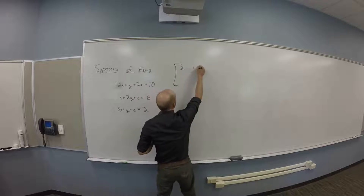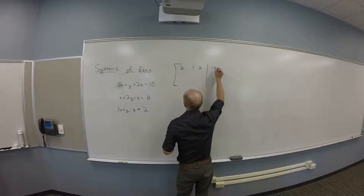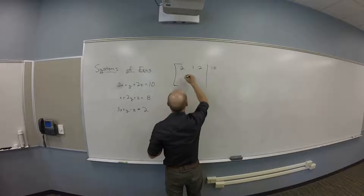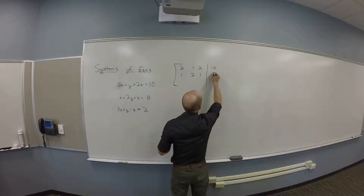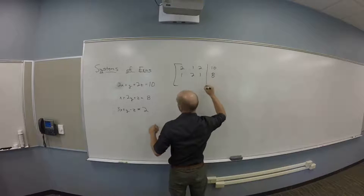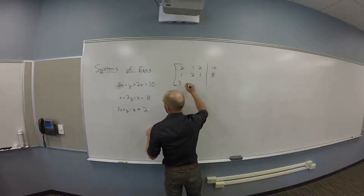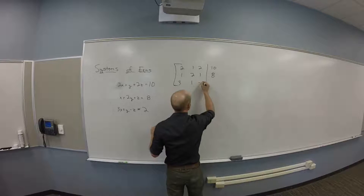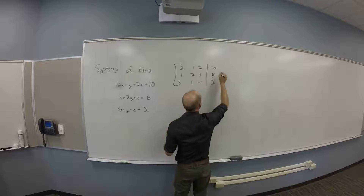I got 2, 1, 2 augmented by 10; then 1, 2, 1 augmented by 8; and 3, 1, negative 1 augmented by 2.